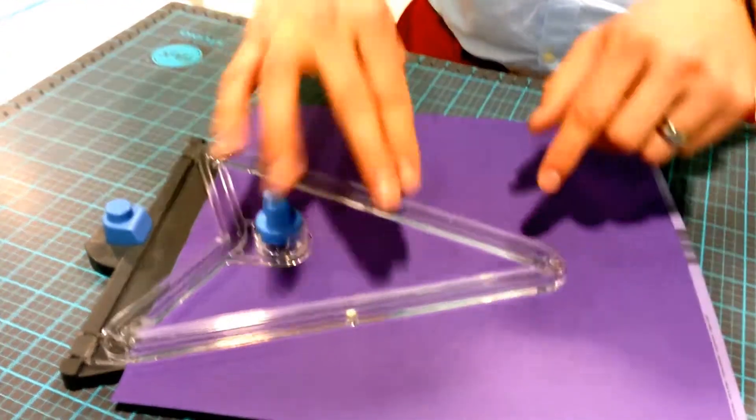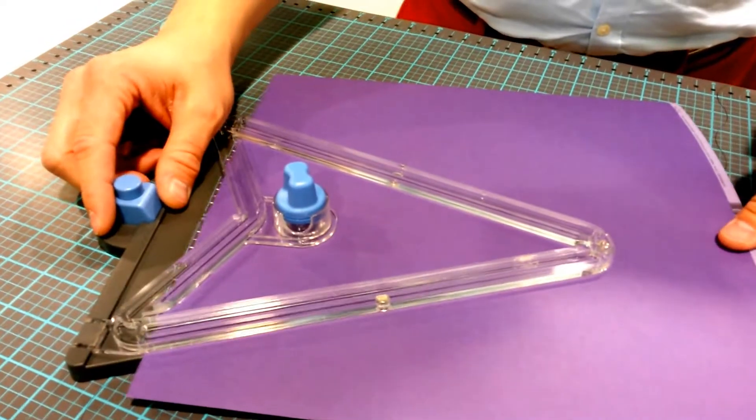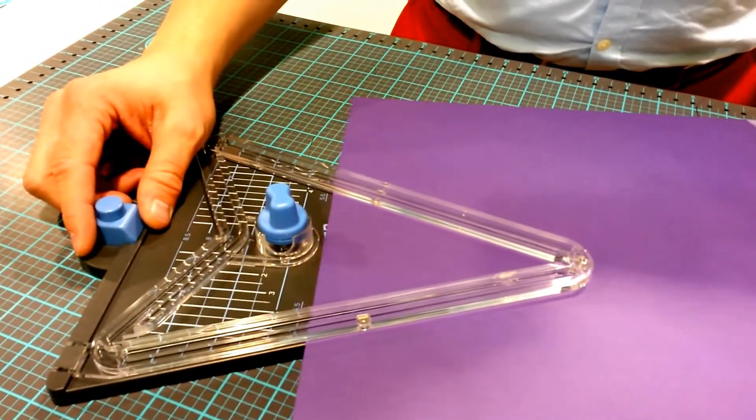As you can see, I'm going to just put my paper in. The magnets are going to hold it in place. Depending on where I put my paper, I'm going to get larger or smaller banners.